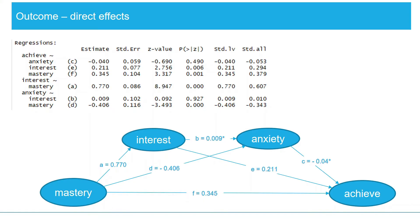Now let's pay attention to the direct effects first. Mastery has a significant direct effect of 0.070 on interest — that can be checked here, as the significance value is less than 0.05 and the coefficient is 0.070. Interest has no significant effect on anxiety, as the p-value is greater than 0.05. Similarly, anxiety has no significant effect on achievement. Mastery has a significant but negative effect of 0.406 on anxiety. Interest has a significant direct effect of 0.211 on achievement. Similarly, mastery has a significant direct effect of 0.345 on achievement.